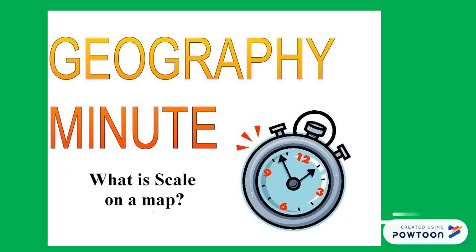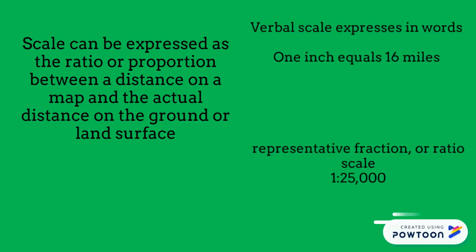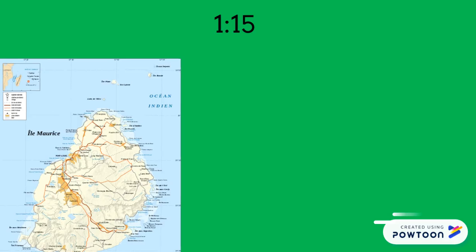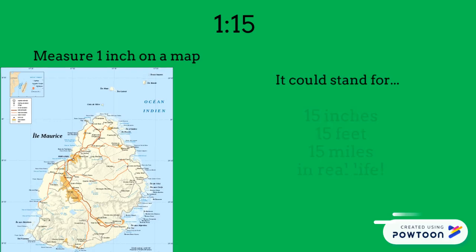In an earlier video I spoke about scale, but to refresh your memory, scale is expressed as the ratio or proportion between a distance on a map and the actual distance on the ground or land surface. For example, if the scale on a map is 1 to 15, that means that when you measure 1 inch on the map, it could stand for 15 inches, feet, or miles in real life.